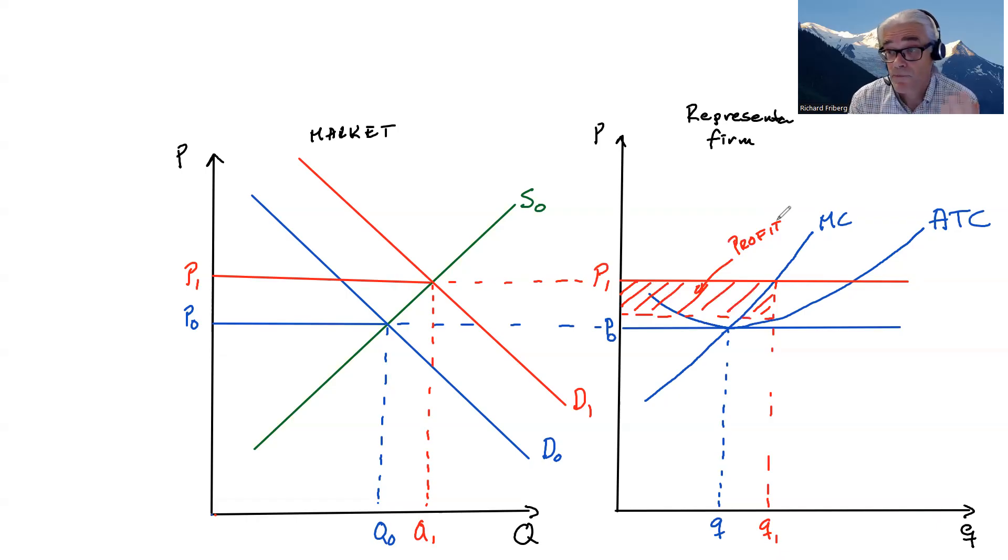Demand shifts up. There could be profits, just like, we're talking about bread here, but we could think about ocean liner shipping, electricity markets, a number of markets where firms act as price takers, but we can have profits or indeed losses in the short run.